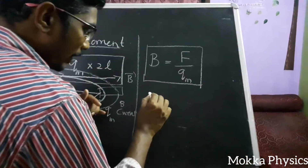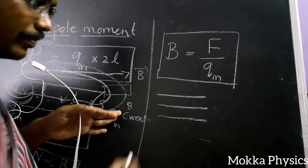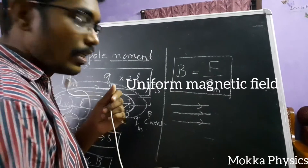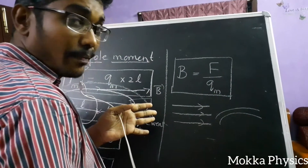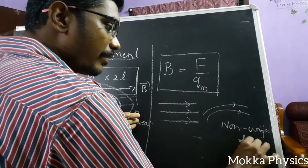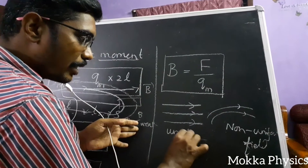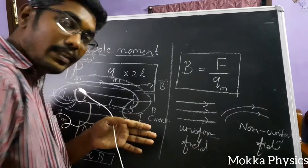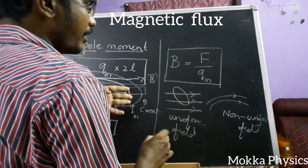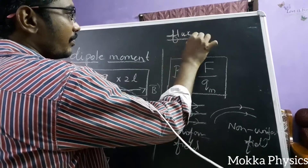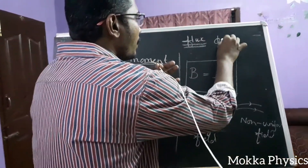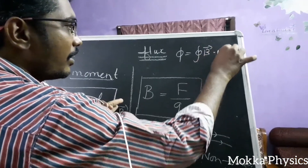How to represent field lines — the textbook method is the same: for a uniform field, we represent it using parallel lines. If there are field lines passing through a particular area, there is a quantity called Magnetic Flux. Magnetic flux is the number of lines passing through a given area. The formula is: Φ equals the integration over a closed surface of B-vector dot dA-vector, which is the general formula.